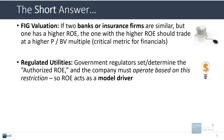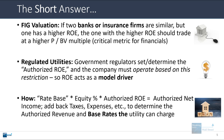In the regulated utility sector, government regulators set the allowed or authorized ROE that a company can earn, and the company has to operate based on this restriction. So the ROE acts not just as a way to check valuations, but actually as a model driver. There is a rate base — essentially the company's total capital — an allowed equity percentage, and an allowed ROE on that equity. Multiplying those together gives you the authorized net income. You can then add back taxes and other expenses to get to the authorized revenue and the base rates the utility can charge.